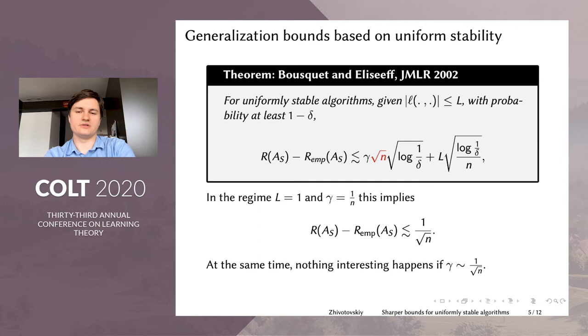Let us consider one particular regime, for example, when L is equal to one. So the losses are bounded by one and the stability parameter scales as 1/n. This bound immediately implies that the risk of the algorithm minus the empirical risk of this algorithm scales as 1/√n, which is the best one can hope for because it's exactly the sampling error. The problem of this bound is that it contains this additional √n factor marked in red. And we may see that nothing interesting happens if γ is say 1/√n. The right-hand side of the bound is a constant, but we expect that it should converge to zero as n goes to infinity.